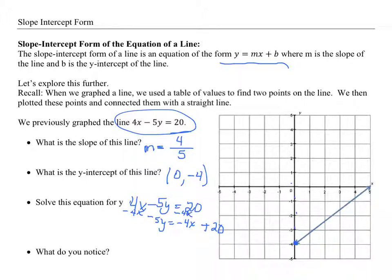So then I'm going to divide everything through by negative 5 individually. So we're going to get y is equal to negative 4 divided by negative 5 is 4 fifths x. Positive 20 divided by negative 5 is a negative 4.